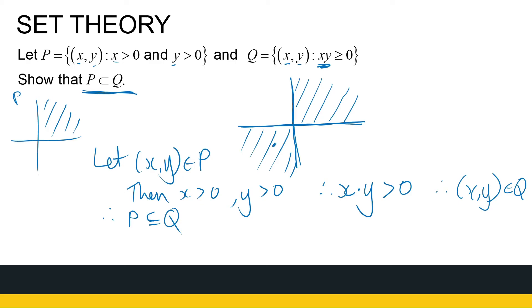Now, I need to find something in Q that's not in P. Well, visually, we can see, let's just choose something over here. Minus 1 minus 1 is an element of Q, since minus 1 times minus 1 gives me something positive. But, minus 1 minus 1 is not an element of P. So, then I can conclude that P is a proper subset of Q.